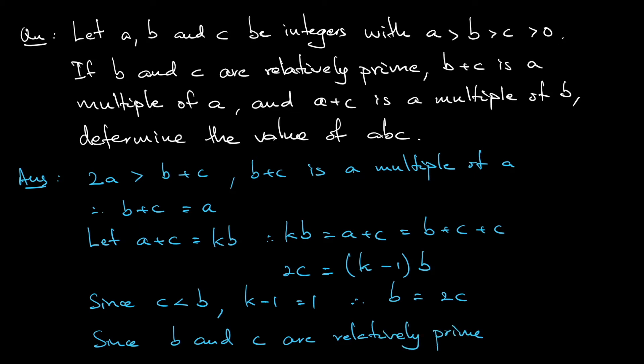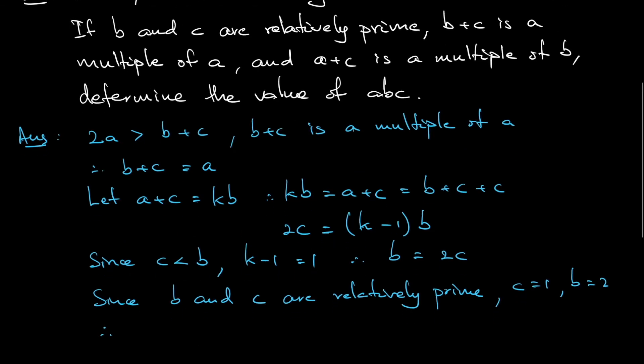The greatest common divisor is only 1, so that means that c need to be 1 and b need to be 2. And just now we know that a is b plus c, so 1 plus 2, that means it's 3.